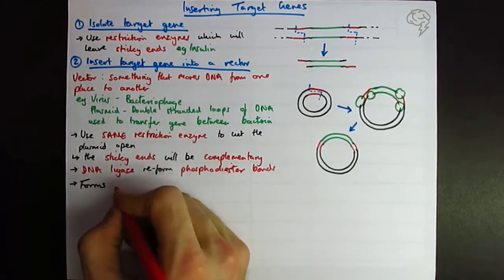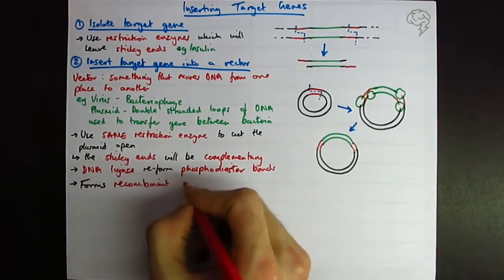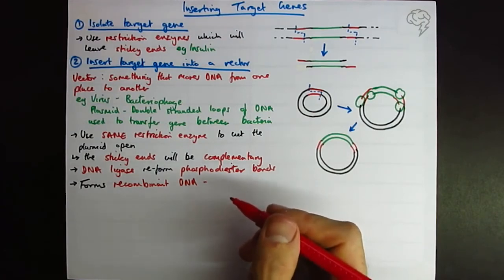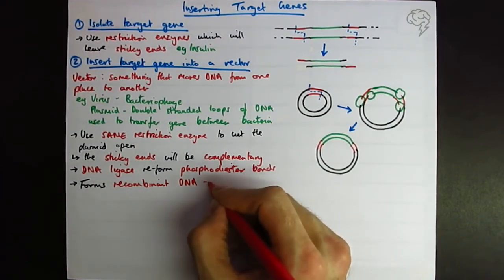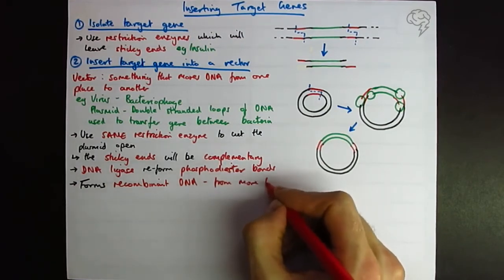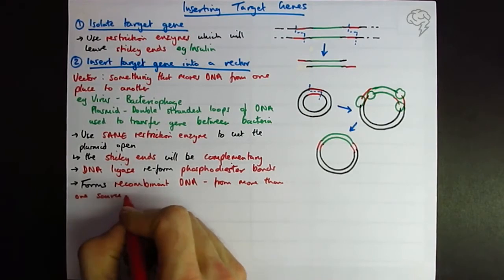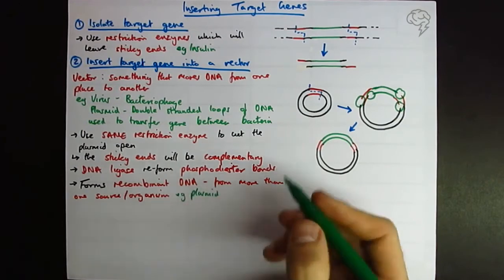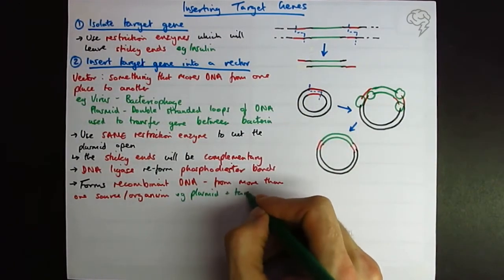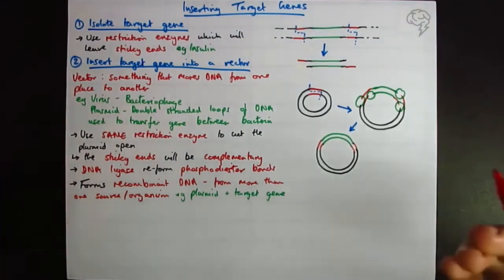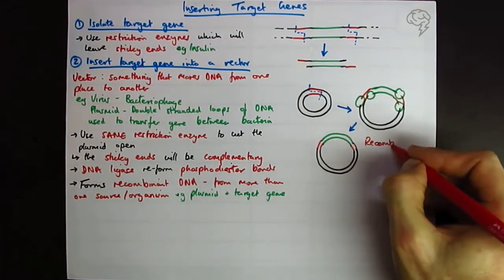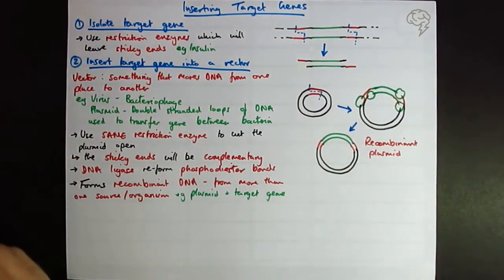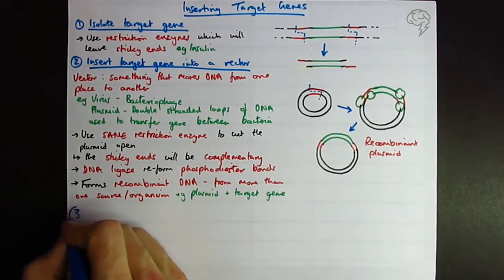Again, another super important key term. So recombinant DNA is DNA from more than one source. I mean, it could be from the same organism, basically from two different organisms. So in this example, we've obviously got the plasmid DNA and we've got our insulin gene. Let's say it's from a human. So this guy here is a recombinant plasmid. This is going to come up time and time again, so make sure you're familiar with it. Now we've got this on its own, not very useful to us.